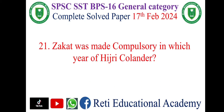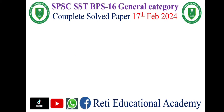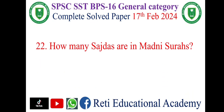Question number 21: Zakat was made compulsory in which year of the Hijri calendar? The correct answer is B — two Hijri. Fasting was also made compulsory in two Hijri. Question number 22: How many sajadas are in Madani surahs? The correct answer is A — 3.